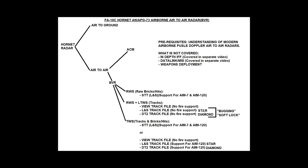Those modes — the L&S and DT-2 while under RWS LTWS — are known officially in the Hornet as soft lock, or soft locking. The third mode is track while scan. We're dealing with tracks and bricks and hits. Again, all three modes can have an STT, and this STT is identical across all three.